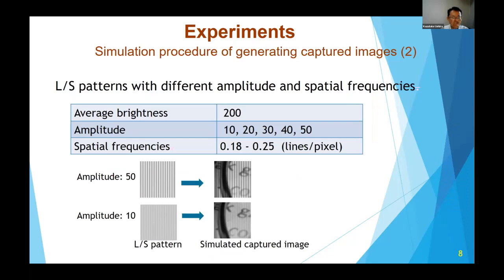We used line-space patterns with different amplitude and spatial frequencies. Its average brightness was 200, and the amplitude was changed in five steps, of which the minimum was 10 and the maximum was 50. These values indicate the gray scale with a maximum of 255. These are magnified line-space patterns when the amplitude was 50 and 10. The images on the right are simulated captured images. Spatial frequency was changed in 16 steps from 0.18 to 0.25 lines per pixel.